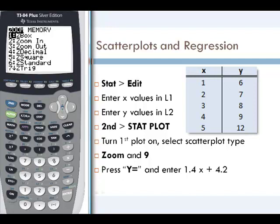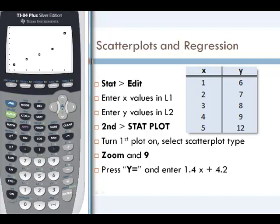Press Zoom, then 9 for statistics. There are our scatter plot points. They look roughly linear, so let's do some regression.